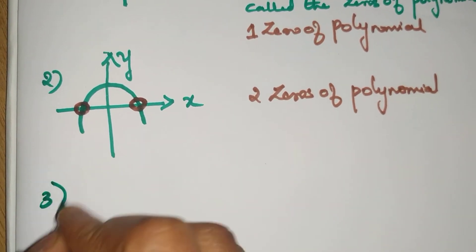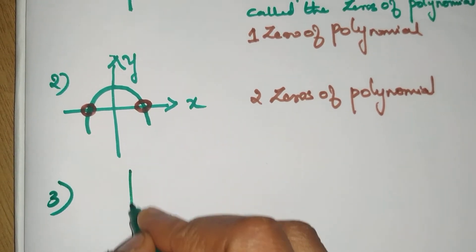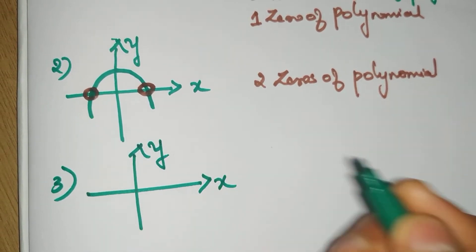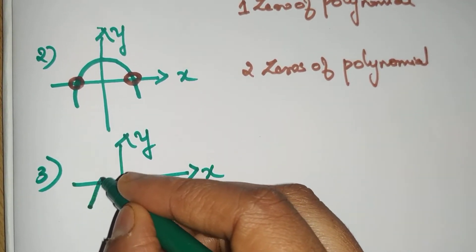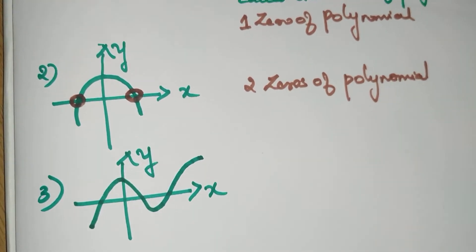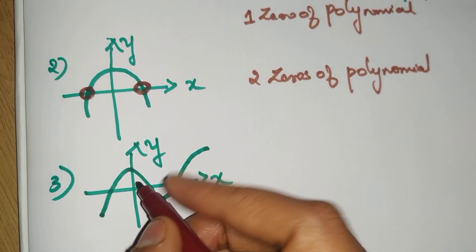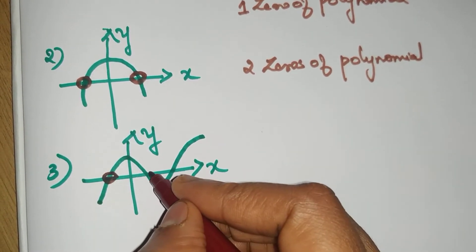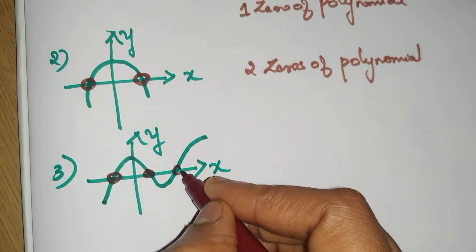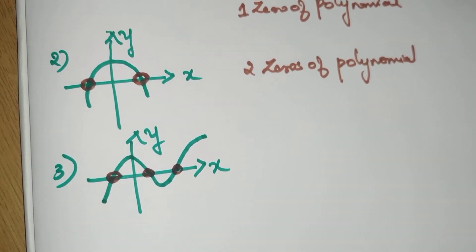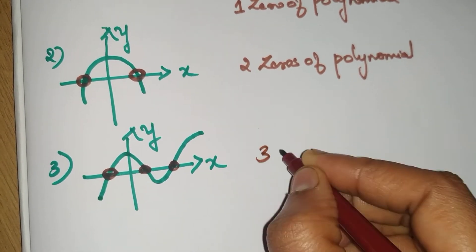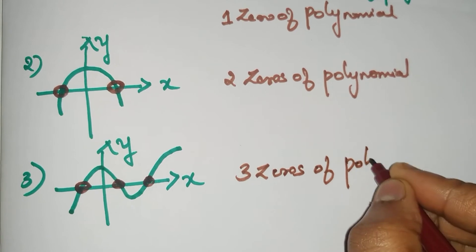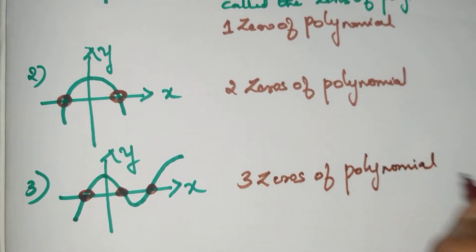Let us consider the third example. Consider x and y axis and you have a curve of this form. In this case you can clearly see this is the first point which meets the x-axis. This is the second point and this will be the third point. So here totally we have three zeros of polynomial.